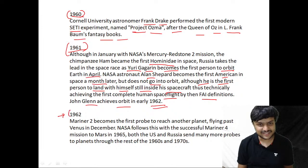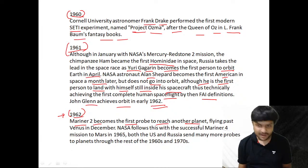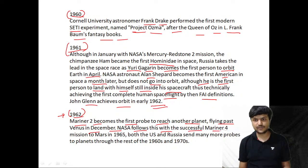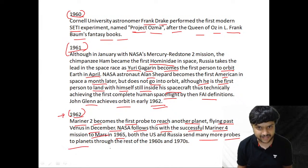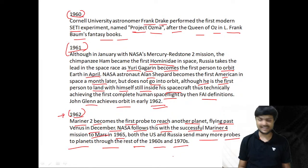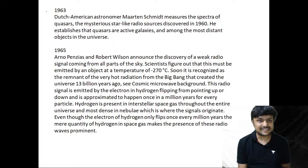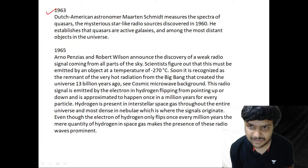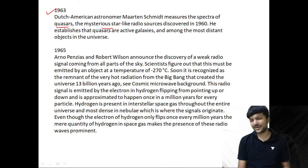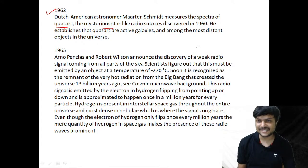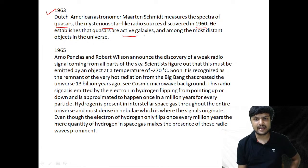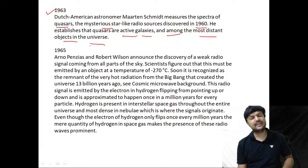In 1962, Mariner 2 becomes the first probe to reach another planet, flying past Venus in December. NASA followed with the successful Mariner 4 mission to Mars in 1965. In 1963, Dutch-American astronomer Maarten Schmidt measures the spectra of quasars — the mysterious radio sources discovered in 1960 — and establishes that they are active galaxies among the most distant objects in the universe.